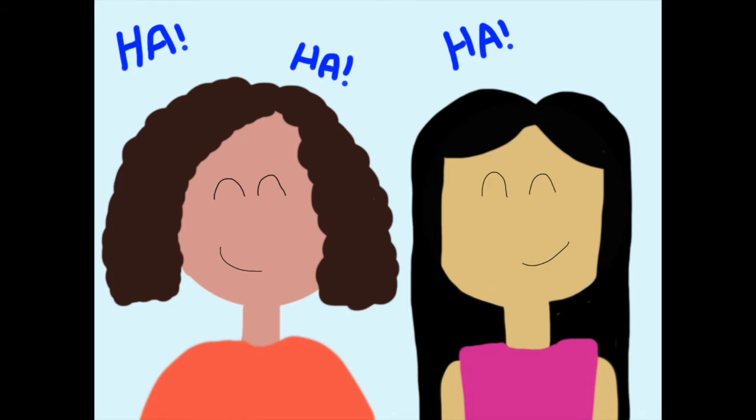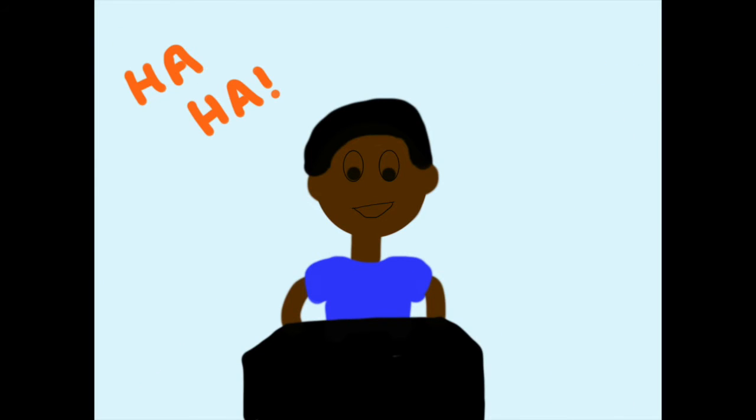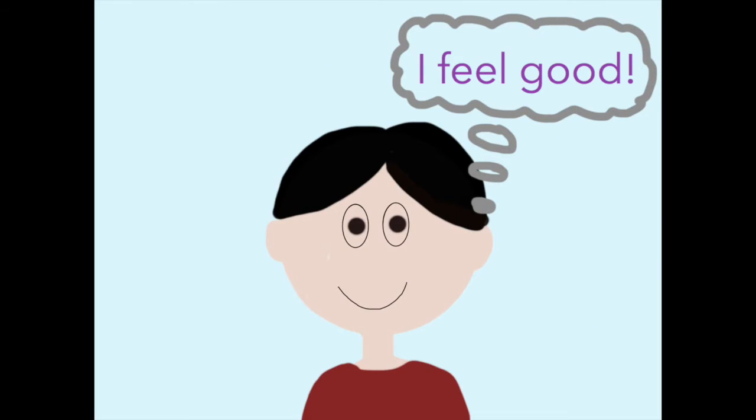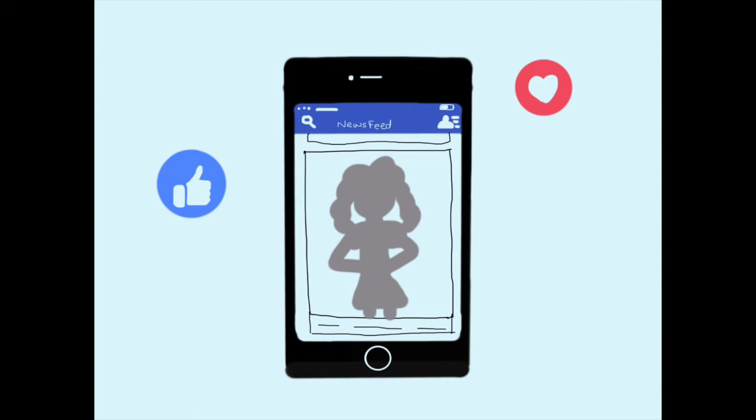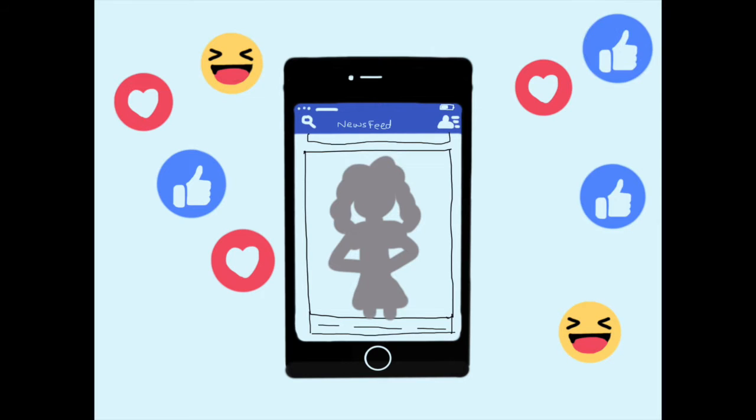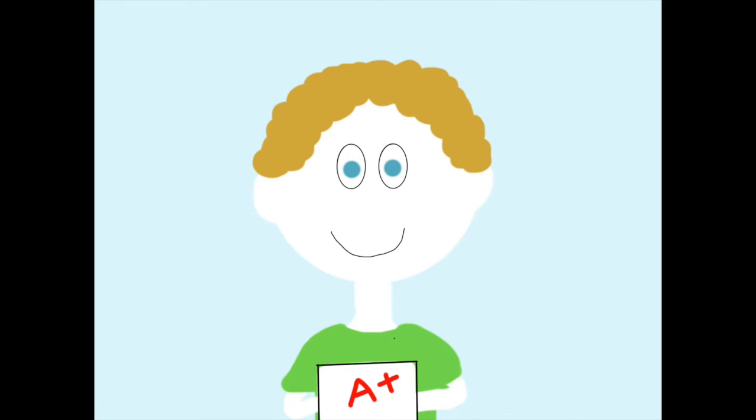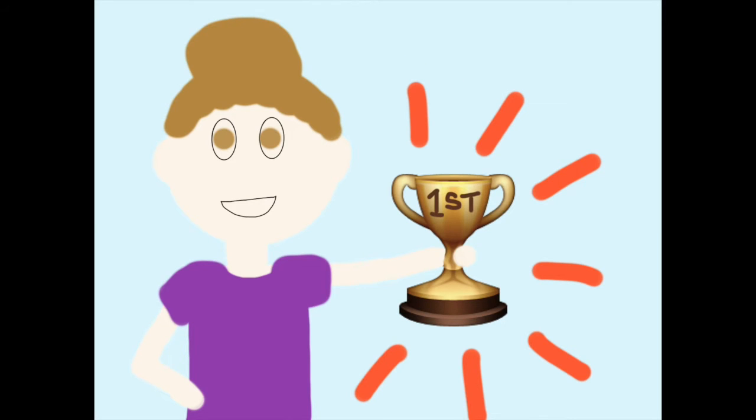When we're doing something we enjoy, like laughing with friends or watching our favorite TV show, our brains release a chemical called dopamine in its reward center. This makes us feel good. You know that feeling of happy satisfaction when you get a lot of likes on a status or picture, that's dopamine at work. This also happens after achieving something positive, such as getting an A on a test or coming first in a race.